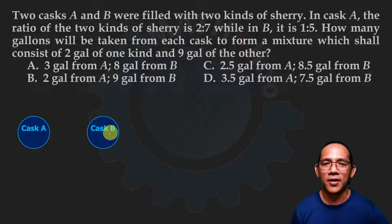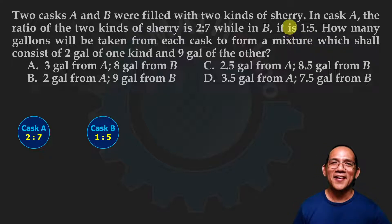Cask A and cask B. Cask A contains, and what's important is the proportion. This cask A contains two parts of the first kind and seven parts of the second kind of sherry, 2 to 7. Cask B is one part of the first kind and five parts of the second kind.